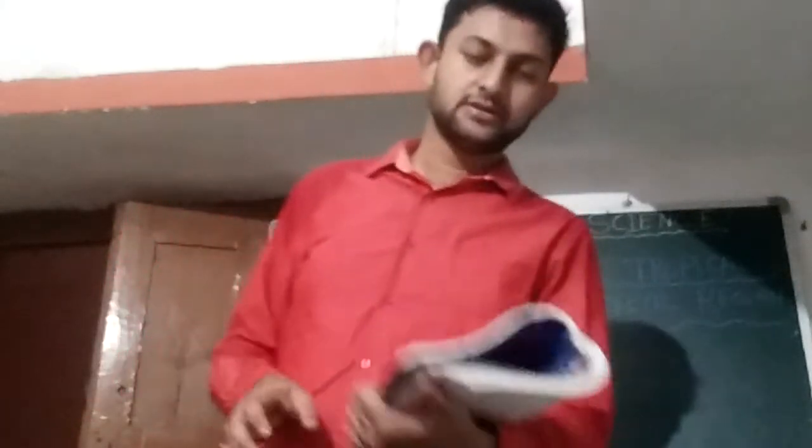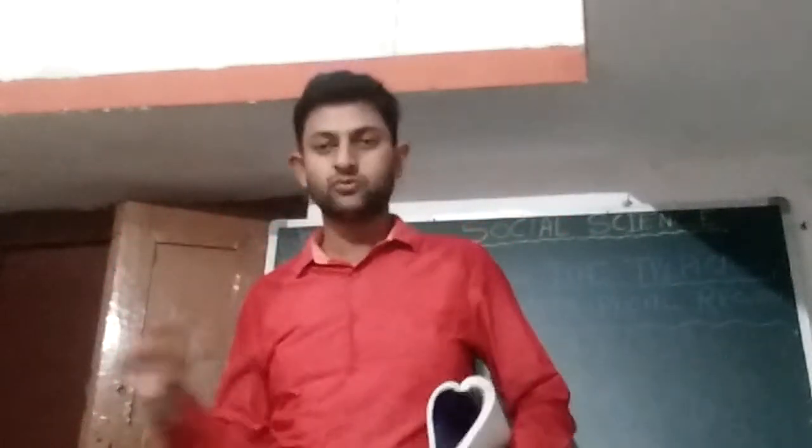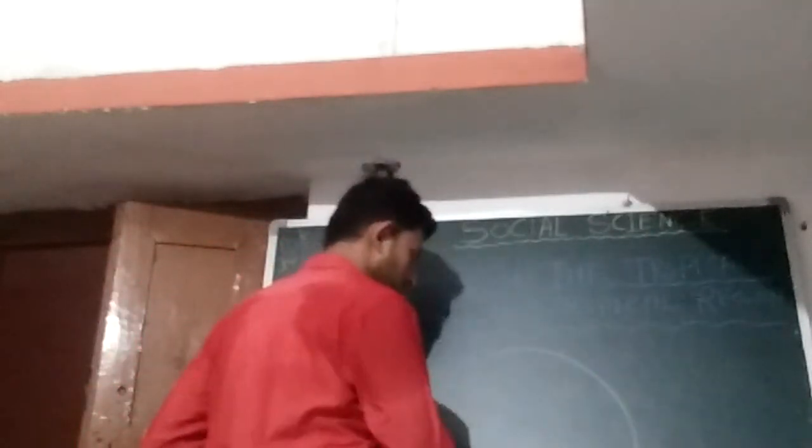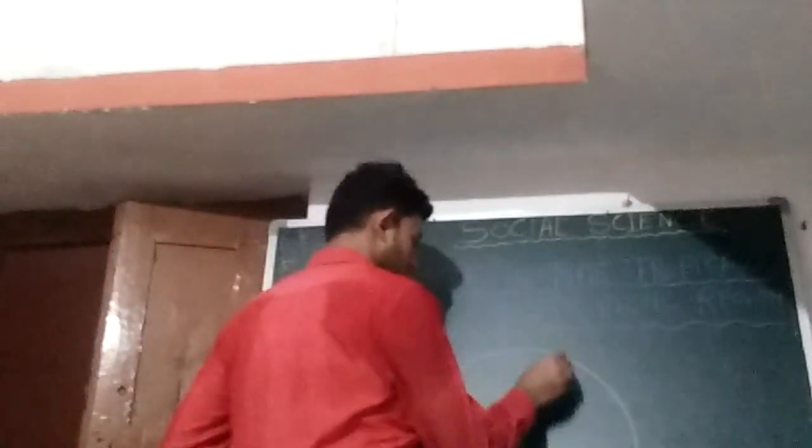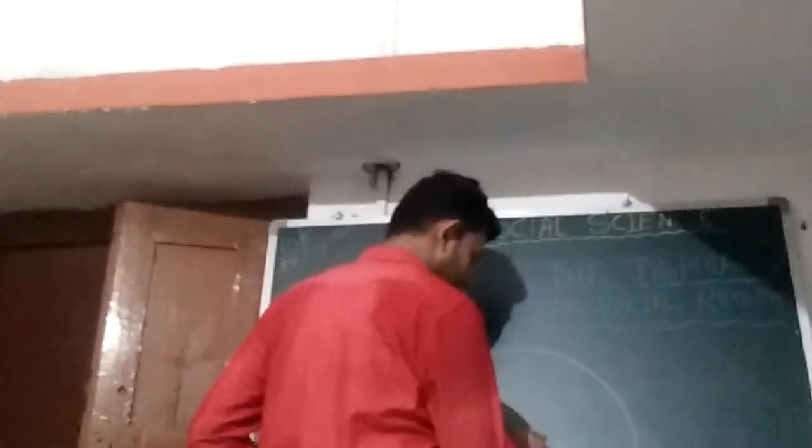First we have to know about the equator. This is the Earth's shape — a circular shape. The equator's angle is 0 degrees.